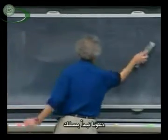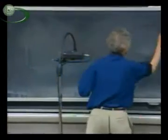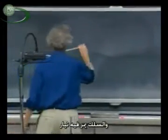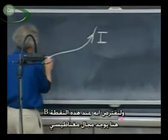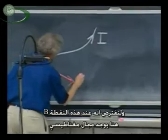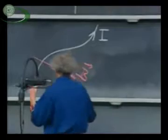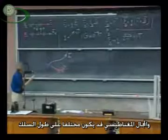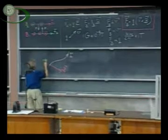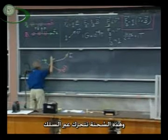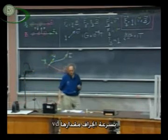Let us start with a wire, and the wire runs a current through it. At this point here we have a magnetic field B, and the magnetic field could be different along the wire in principle. Here I have a charge plus DQ, and this charge is running through the wire with a drift velocity V_d.